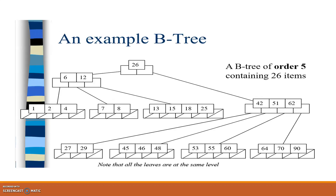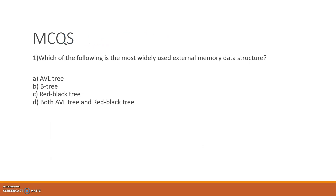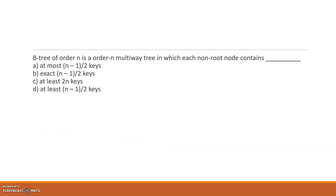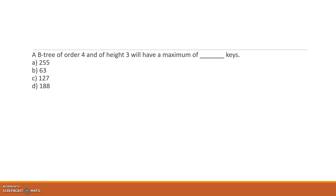Let's see how much you have understood by taking some MCQs. Which of the following is the most widely used external memory data structure? The answer is B-tree. Next: a B-tree of order n — each non-root node contains at least how many keys? The answer is at least ceil(n/2) minus 1 keys, as seen in the rules of B-tree.